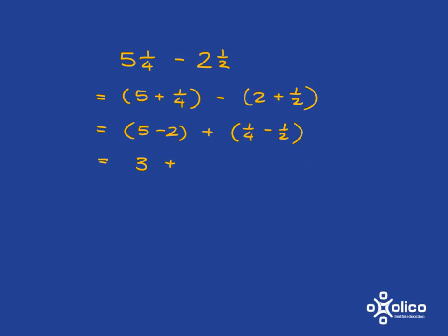What we do is we actually split this 3 up into a 2 and a 1, and we put the 1 together with the 1/4. Now there's no problem because I can say 1 and 1/4, which is 5/4, minus 1/2, which is 2/4, and that's just 3/4. So I've got 2 and 3/4.